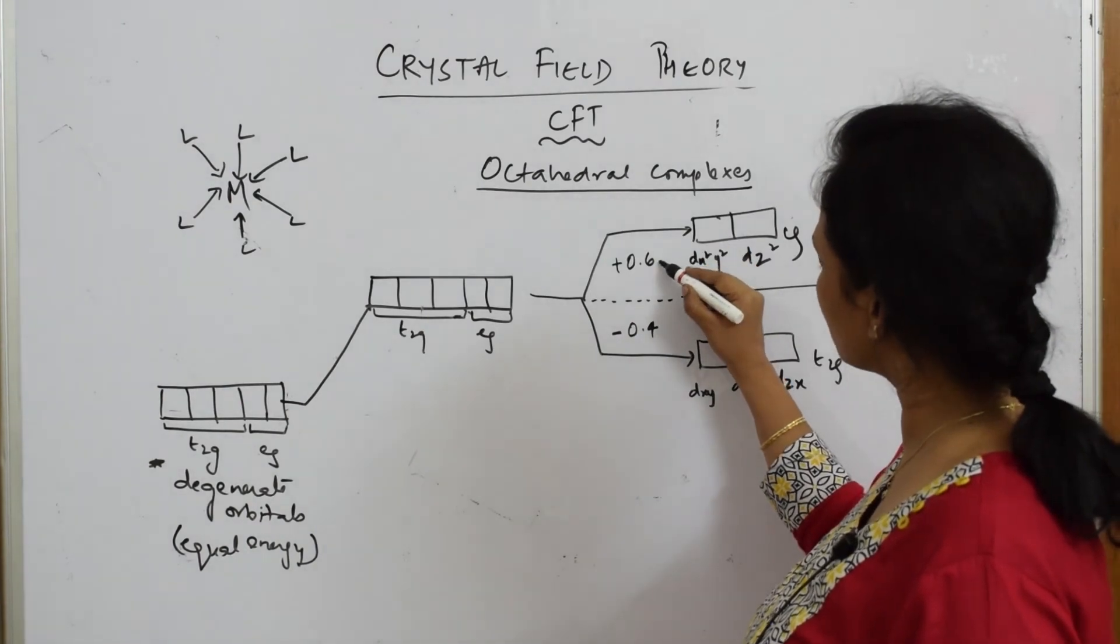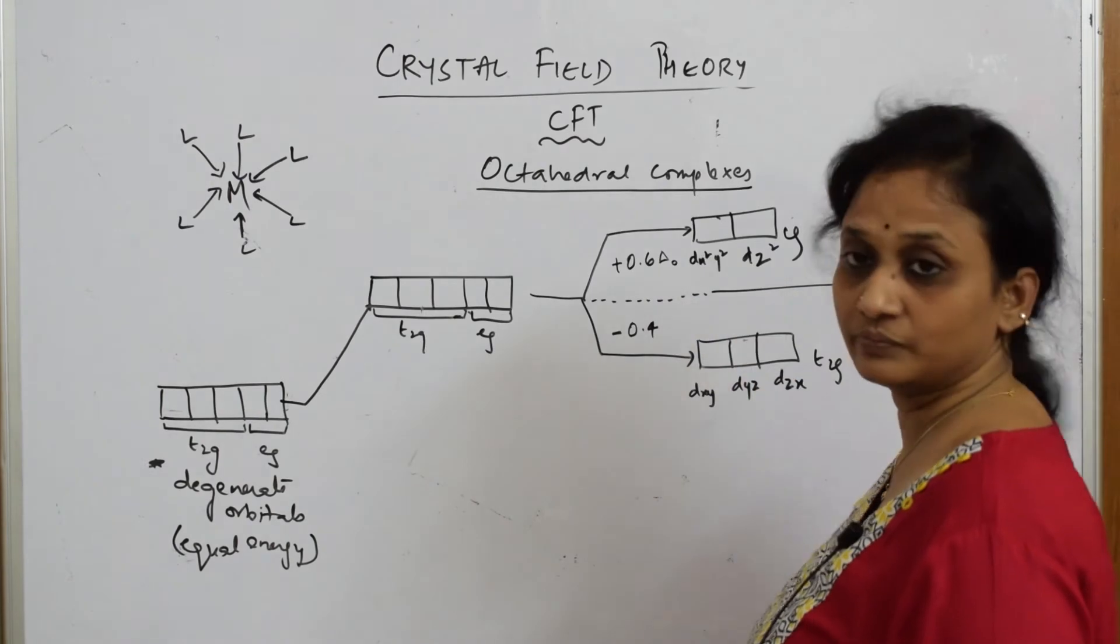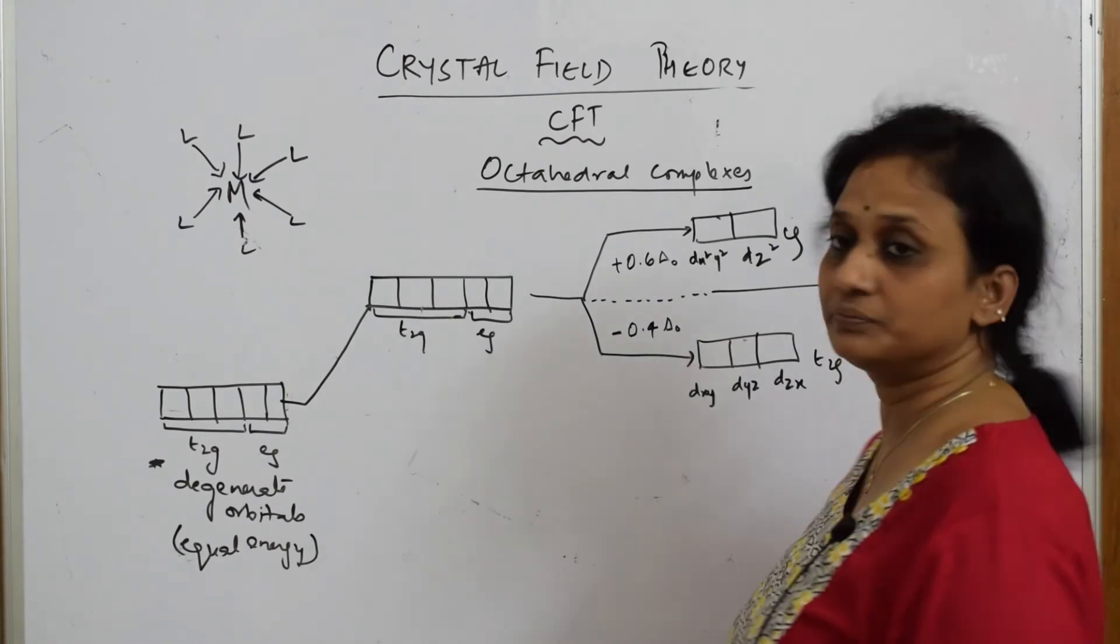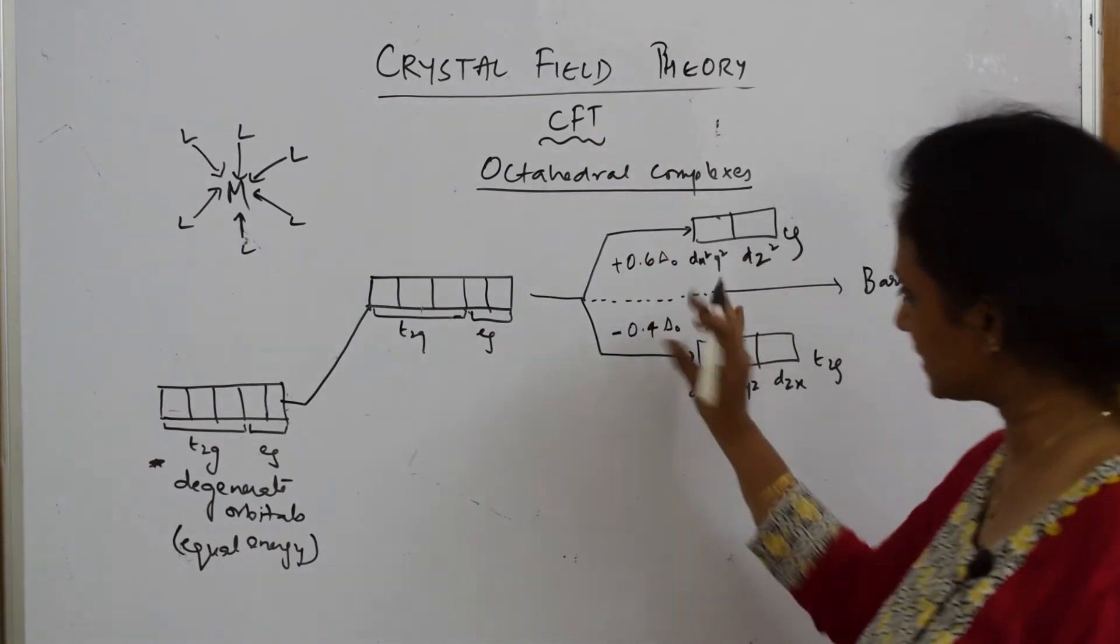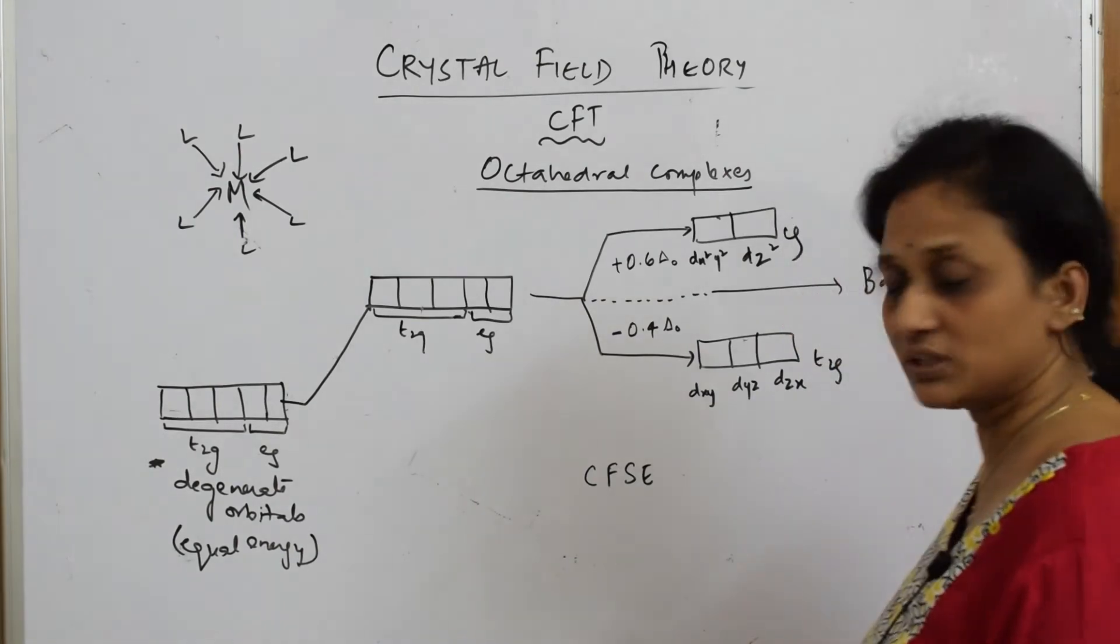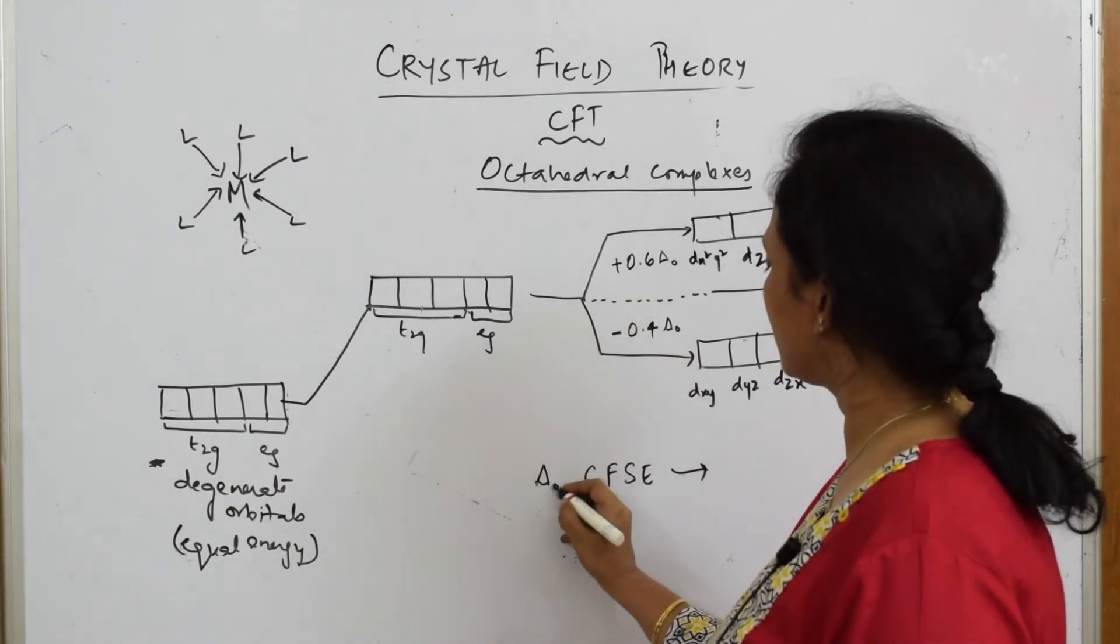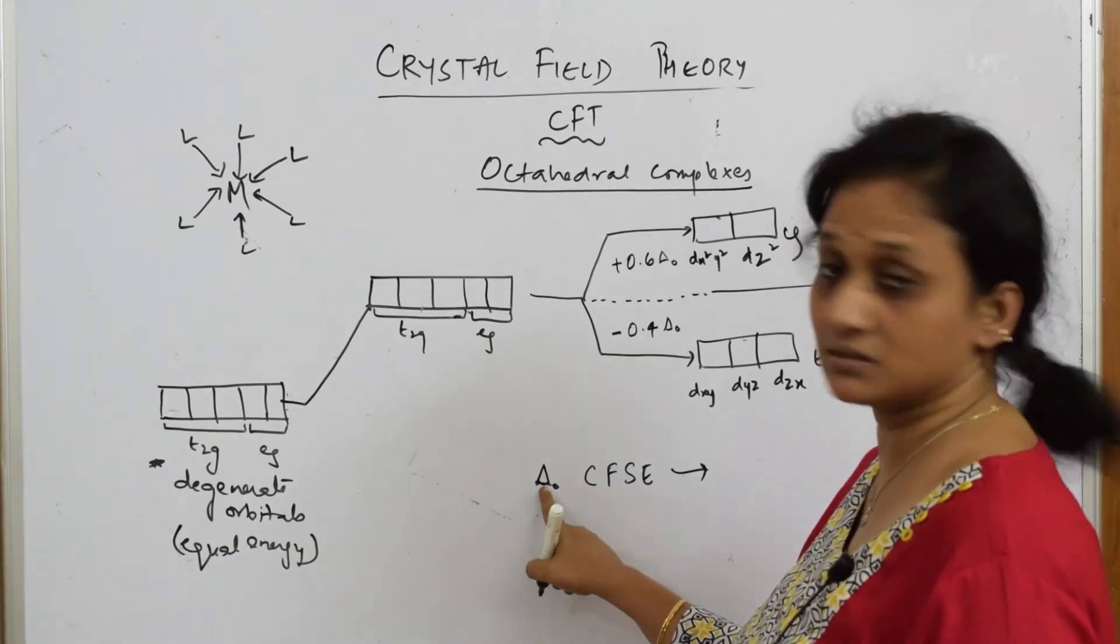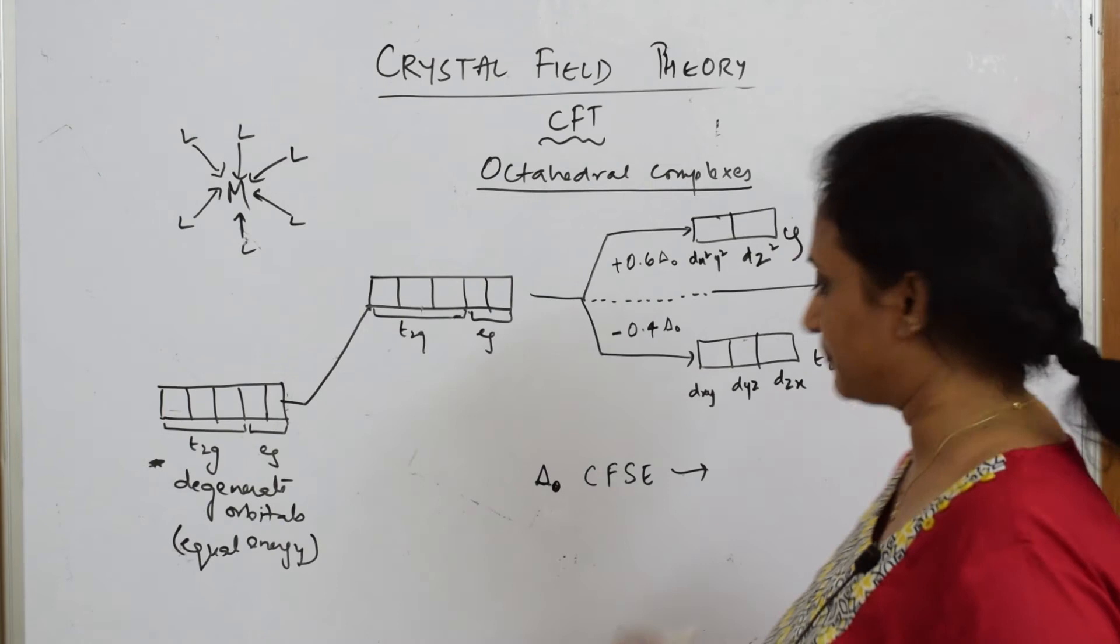I'm going to use the symbol delta_o - I'll tell you what it is. What is this? This particular thing is called CFSC. CFSC or this is denoted by delta_o. Octahedral splitting - 'o' stands for octahedral, for tetrahedral it's 't'. CFSC stands for crystal field splitting energy.